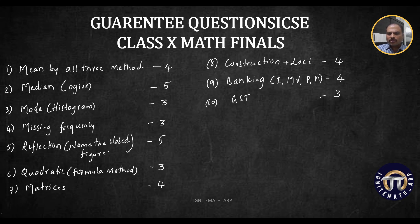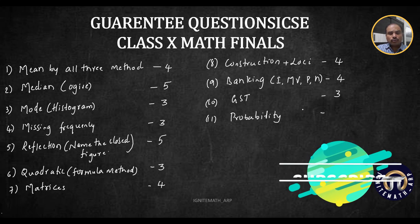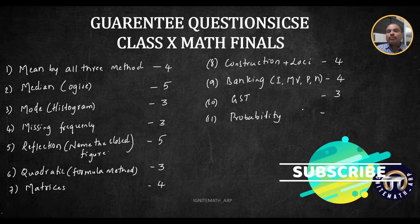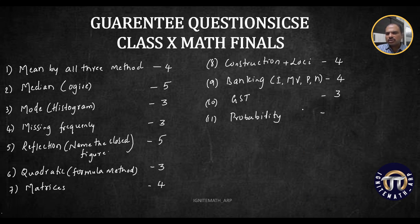Next one, the eleventh one, is probability. Very simple concept. Probability - you are asked to find out the probability of getting even numbers in a single throw of dice, different varieties of questions. Till now we did not get any questions from a deck of playing cards, but don't ignore them. Practice two or three questions. That is also a very simple concept. You can easily score the marks. Minimum three marks.